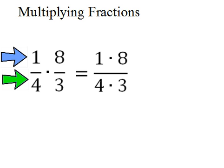To multiply fractions, you just multiply across the top and multiply across the bottom. So here we've got 1 fourth times 8 thirds, so we're going to multiply across the top 1 times 8, and across the bottom 4 times 3.